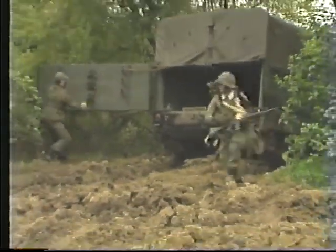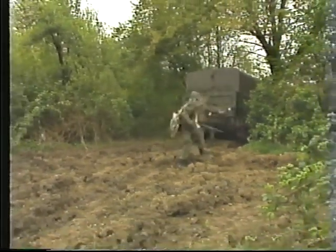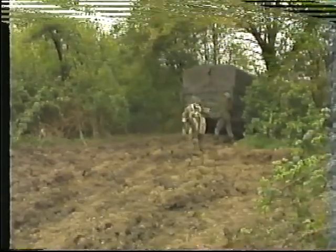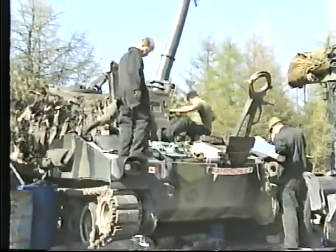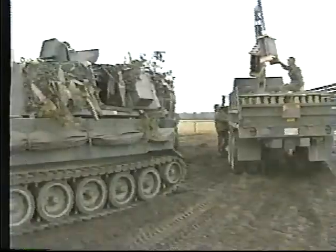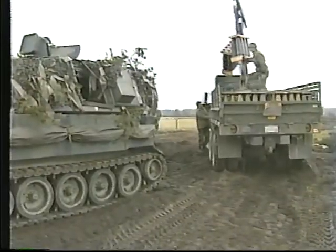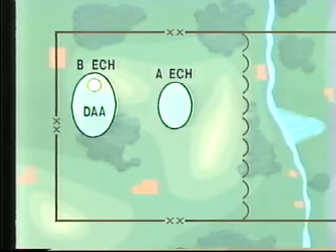The battalion's administrative company is lightly structured in accordance with the detached nature of its subunits. Its A2 echelon concentrates mainly on forward repair, ammunition resupply, and casualty evacuation, while the battalion's B echelon is located in the division administrative area.